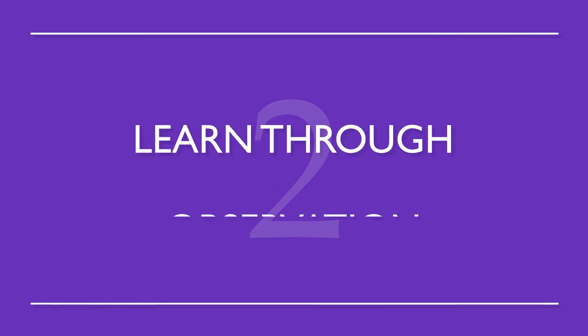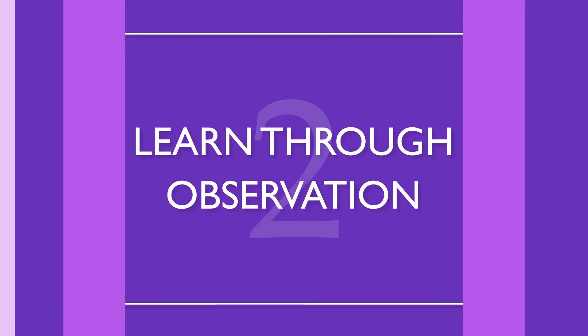Number two: Learn through observation. This is how we all learned our native languages as kids. Words will develop their own meanings that relate better to your target language, rather than meanings that are translated directly.